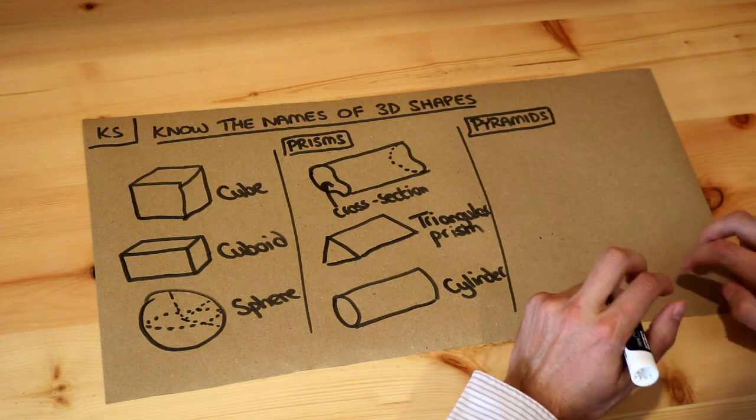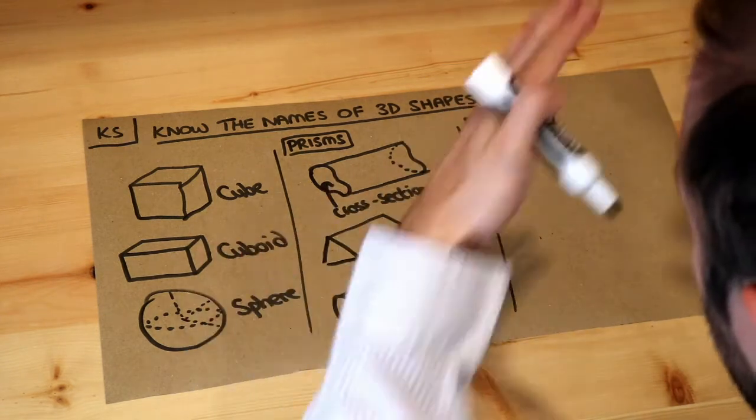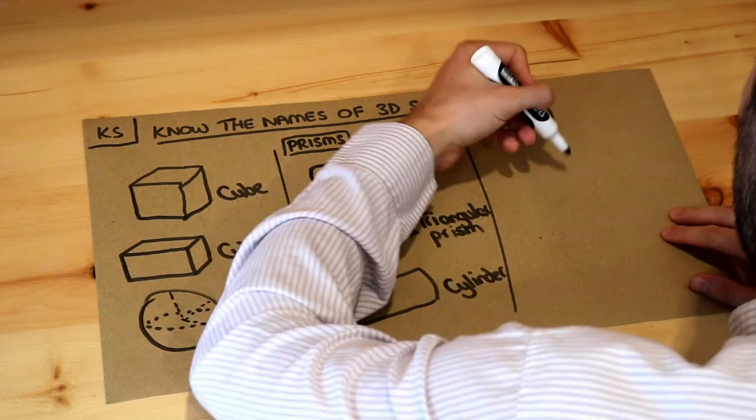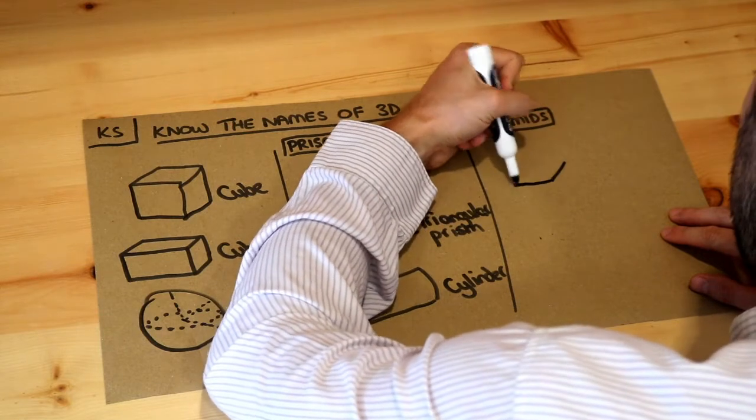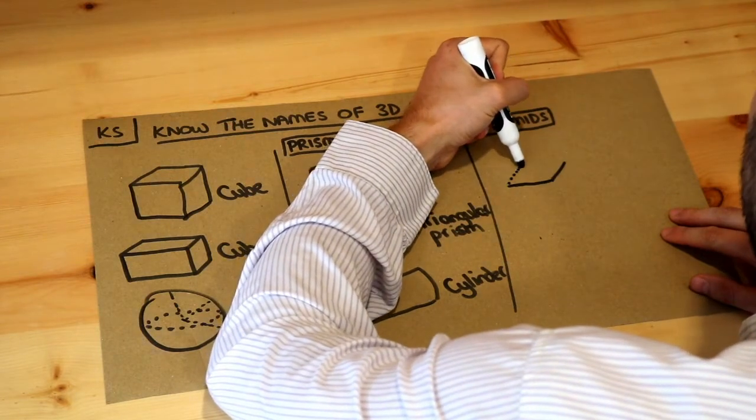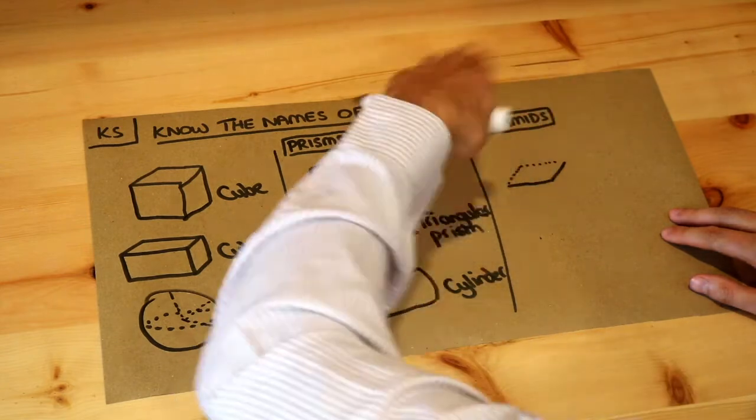And then finally we've got pyramids. Now the pyramids you see in Egypt, that is in fact a pyramid shape. And what it is, is if you start with a shape at the bottom, so imagine like a square, this is a square in 3D.